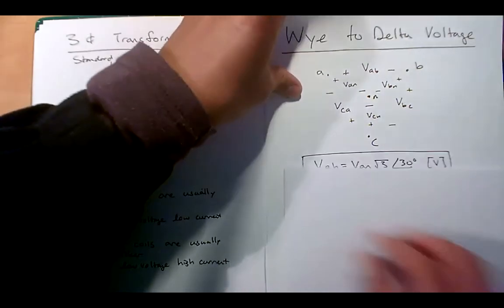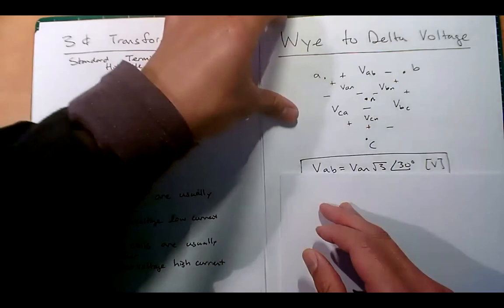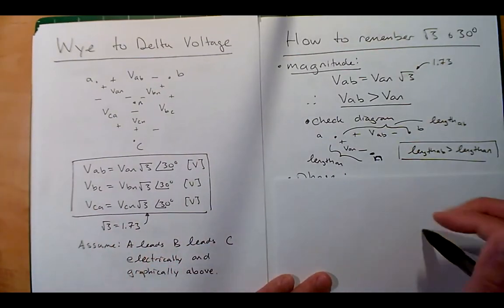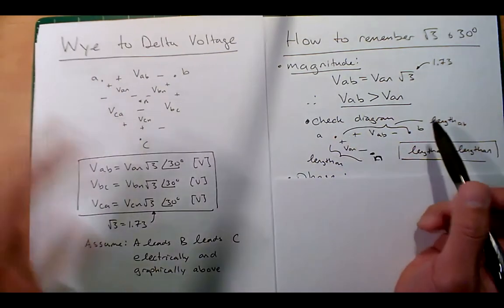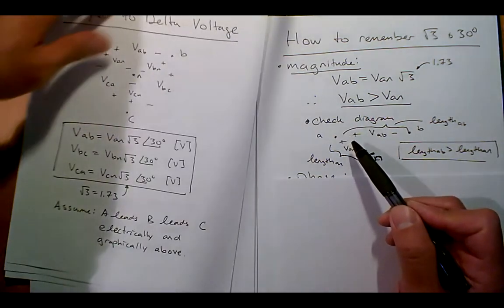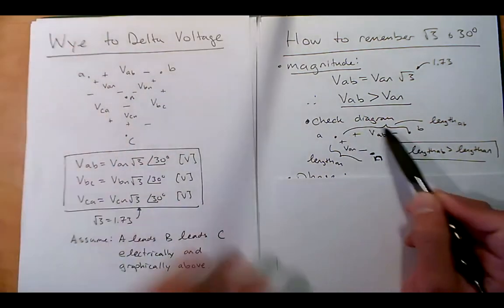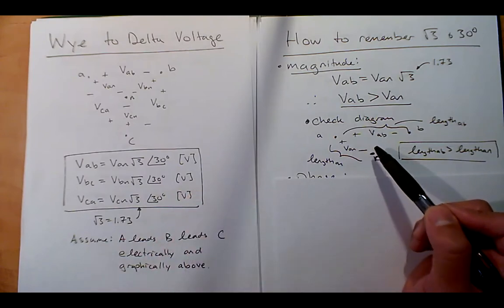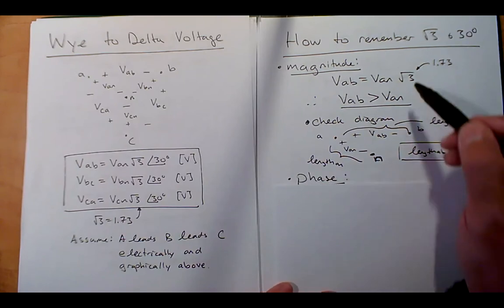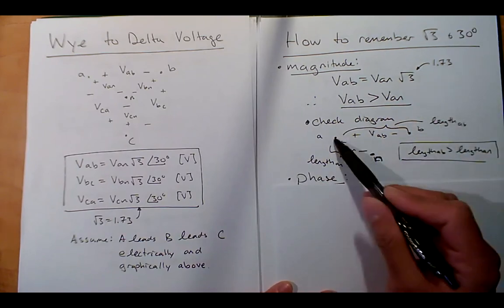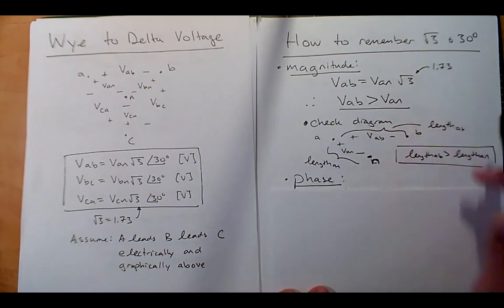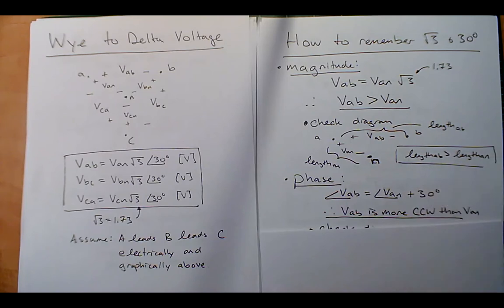How do I remember that? You can look at a phasor diagram. The line-to-line distance is literally a farther distance — it's bigger. That's kind of the length of AB as drawn. You can of course go to your phasor math and prove all that, but if you remember the factor and just look at a diagram, that's typically how I remember it.